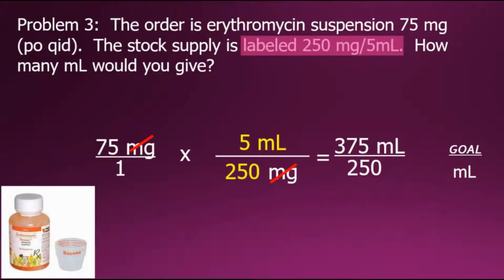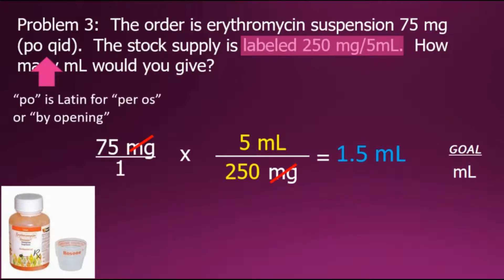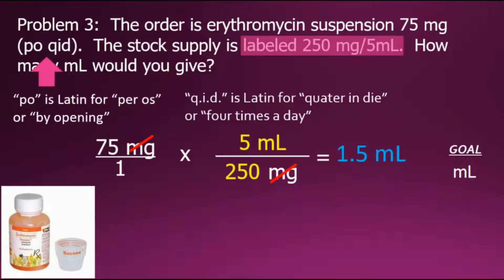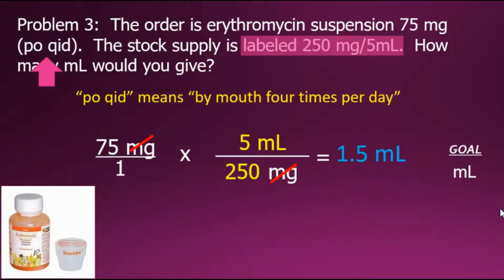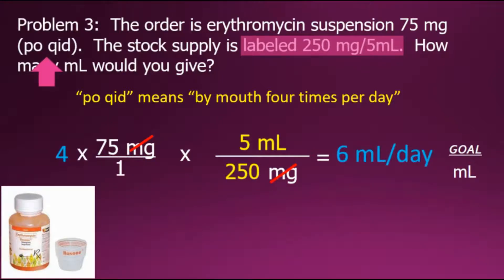Dividing 375 by 250 gives a final simplified answer of 1.5 milliliters per dose. The order also included PO QID: PO is Latin for 'per os,' meaning by mouth, and QID is Latin for 'quater in die,' meaning four times a day. So PO QID means by mouth four times per day. We calculated 1.5 mL per dose; for a full day, we multiply by four for a total of 6 milliliters per day.